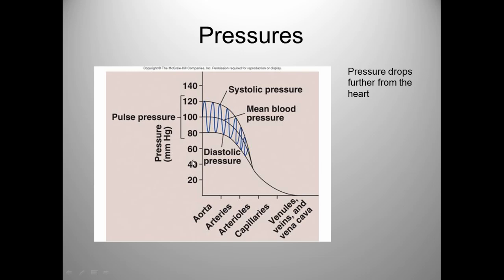Looking at a diagram showing the pressure between the different blood vessels, you can see that the aorta is the major artery coming out of the heart. It has both systolic and diastolic pressure. As you go further away from the heart towards the veins, the pressure drops dramatically. Once you get to roughly around the capillaries, there is no more diastolic or systolic pressure. That idea of pressure from the heart contracting and relaxing is only relevant to arteries and arterioles.